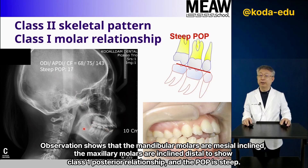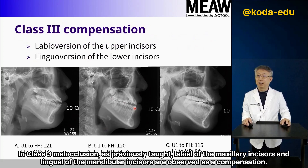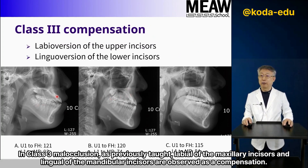Observation shows that the mandibular molars are mesially inclined and the maxillary molars are distally inclined to show a Class 1 posterior relationship, and the POP is steep. In Class 3 malocclusion, as previously discussed, labial inclination of the maxillary incisors and lingual inclination of the mandibular incisors are observed as compensation.